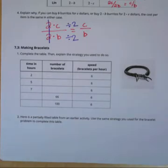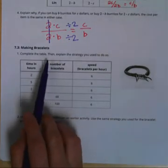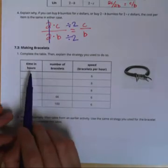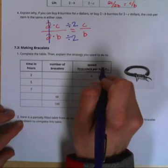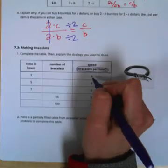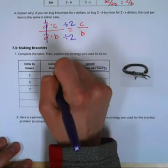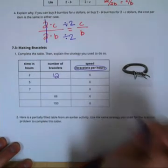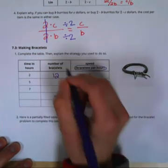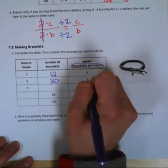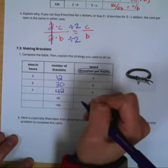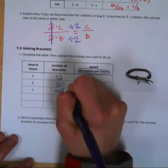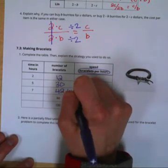Let's try another example that would be similar to what would be on your test. Complete the table and explain your strategy. In two hours how many bracelets could you make if you make six bracelets per hour? Six bracelets per hour means you make six in one hour. So in two hours you would make 12, six times two. In five hours you would make 30 bracelets, six times five. In seven hours you would make 42 bracelets, seven times six.